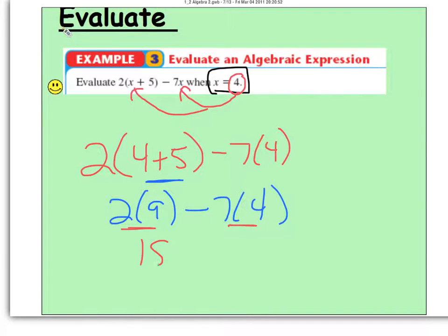2 times 9 is 18. This is minus if I do 7 times 4 is 28. Adding and subtracting is last, so 18 minus 28 will give us negative 10.